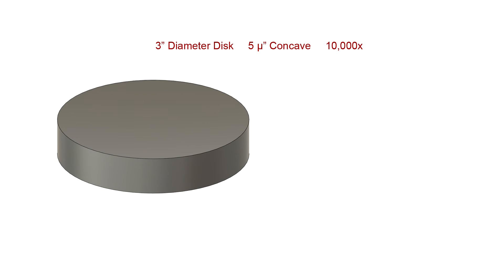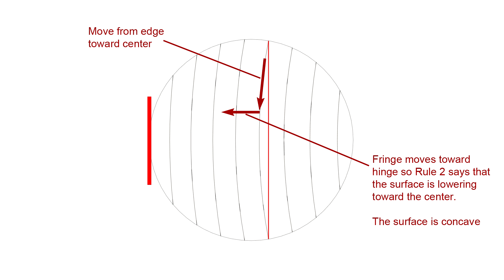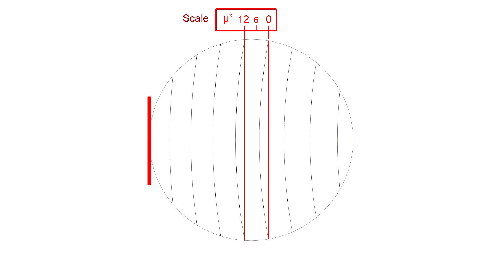Let's look at a CAD model to confirm our interpretation. This disk has a 5 microinch spherical concavity, scaled 10,000x vertically. It's a little difficult to see in the ISO view, so let's section it to make it clearer. Tilting the optical flat on one edge, here's the fringe pattern that results. Following a fringe from an edge toward the center, the fringe moves toward the hinge, so rule 2 says that the surface is lowering toward the center. The surface is concave. Again, establish a scale to measure the depth of the concavity. And finally, identify the position of the fringe at the center, and estimate its movement toward the hinge. It's about 4 tenths of a fringe, about 5 microinches, which is the depth of the modeled concavity. We could apply the same process for fringes away from the center, and we'd see that the depth of the concavity decreases toward the edges, which we'd expect for a spherical concavity.